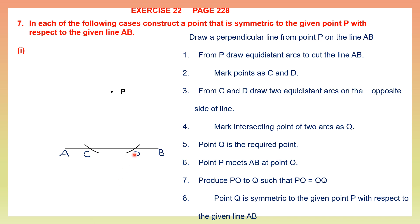Now look at point 3. From C and D, draw two equidistant arcs — equidistance means the same measurement — on the opposite side of the line. We already have point P on one side of the line, and we are going to draw on the opposite side. Keep the needle of your compass on C and draw an arc, then keep it on D and cut that arc. As you can see, the two arcs have cut each other. Mark the intersecting point of the two arcs as Q.